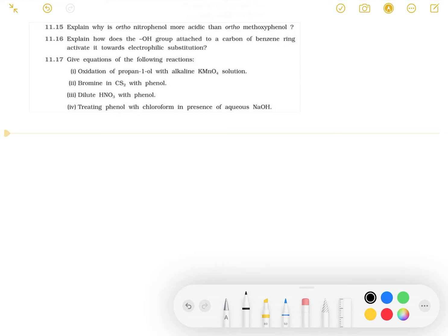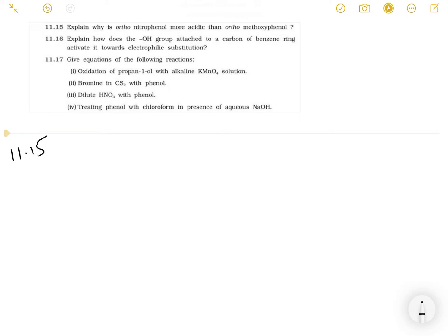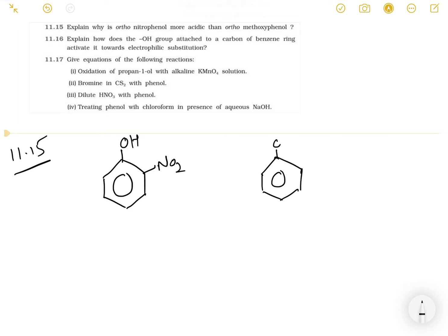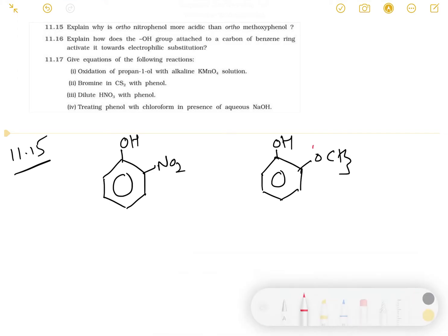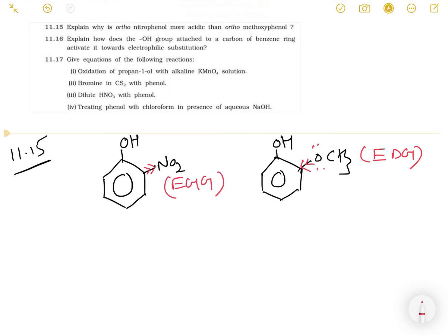Hello and welcome, dear students. We will discuss question 11.15: ortho-nitrophenol is more acidic than ortho-methoxyphenol. To decide the acidity of any structure, if an electron donating group such as OCH3 is present, acidity decreases. If NO2 is present, it is an electron withdrawing group, and electron withdrawing groups generally increase acidity of any structure.